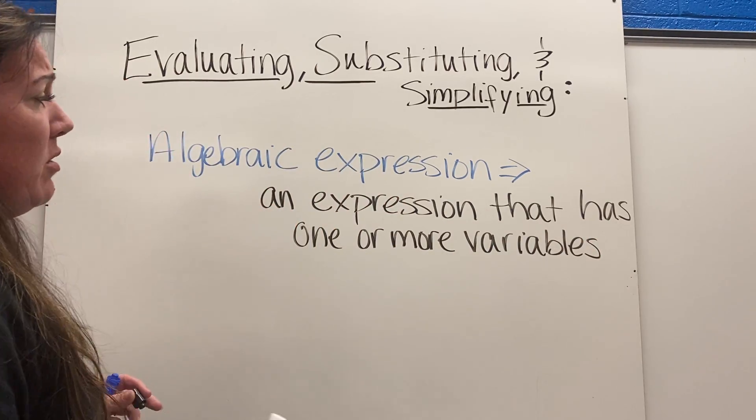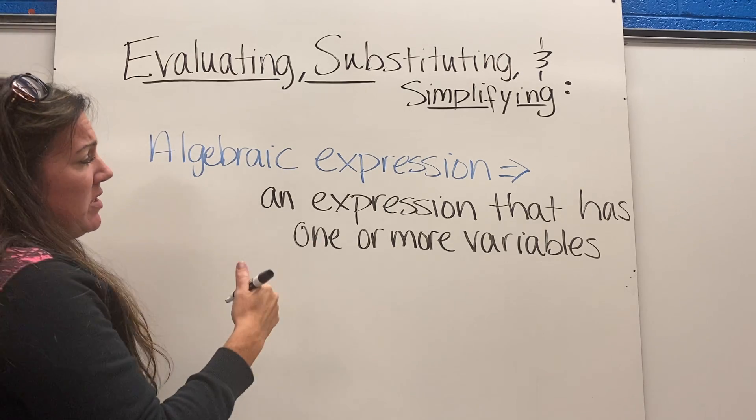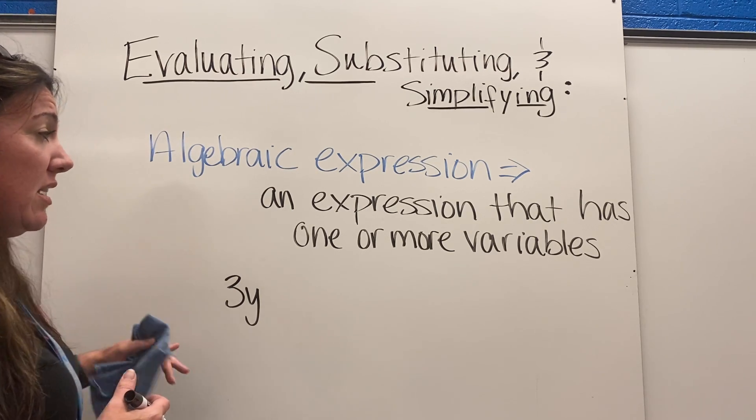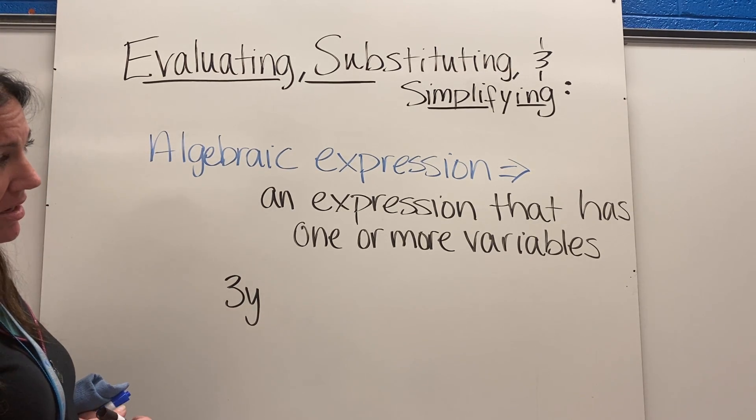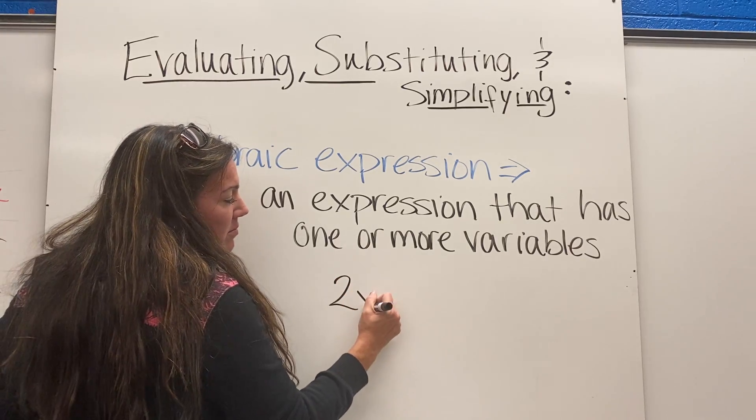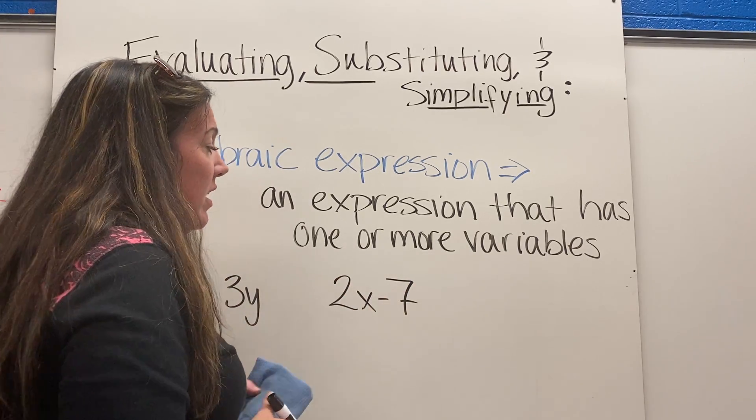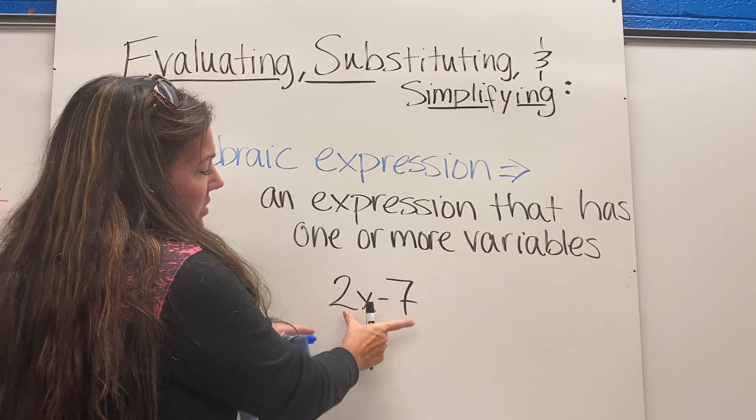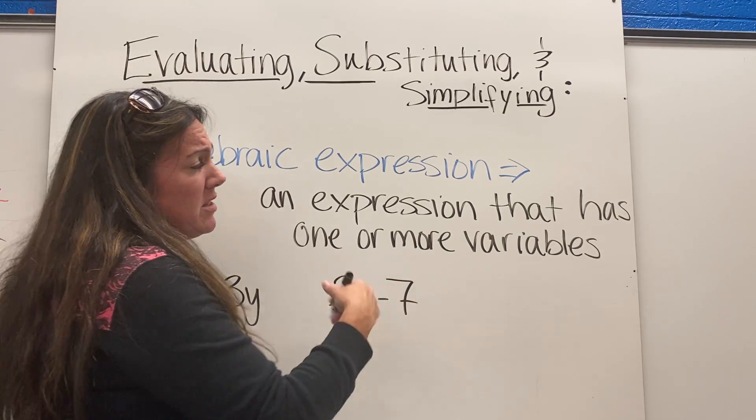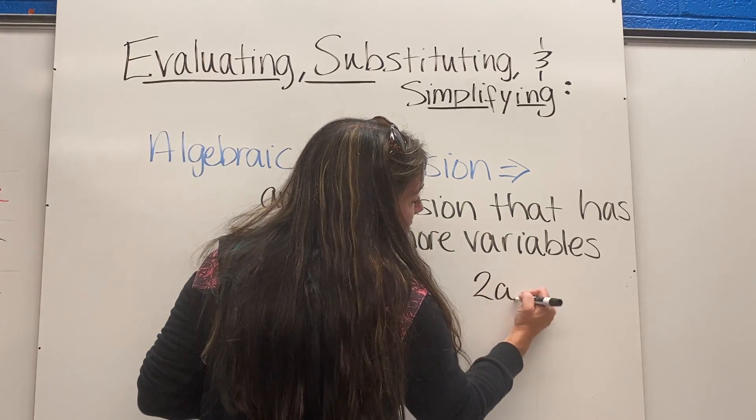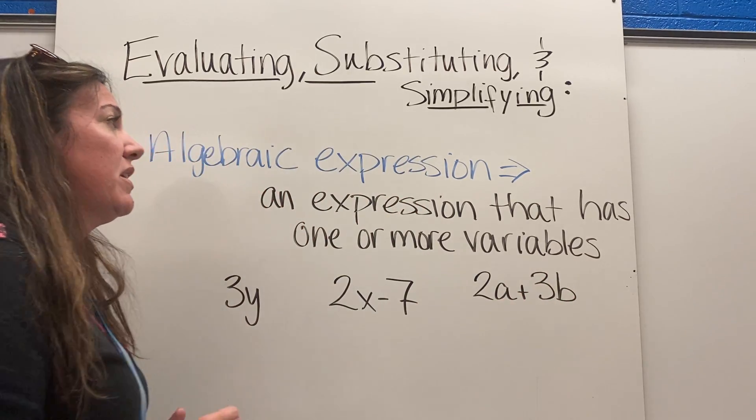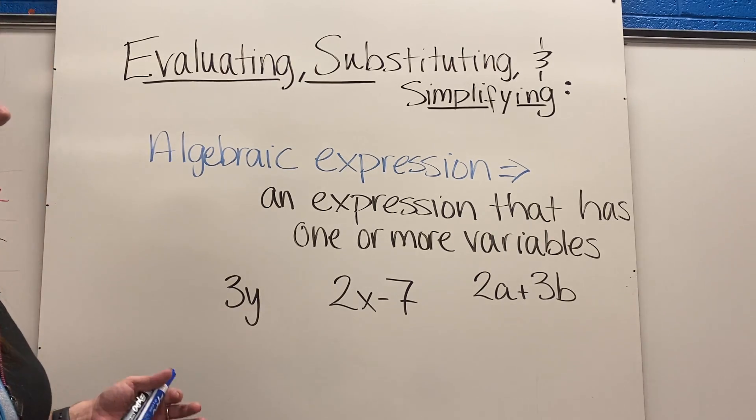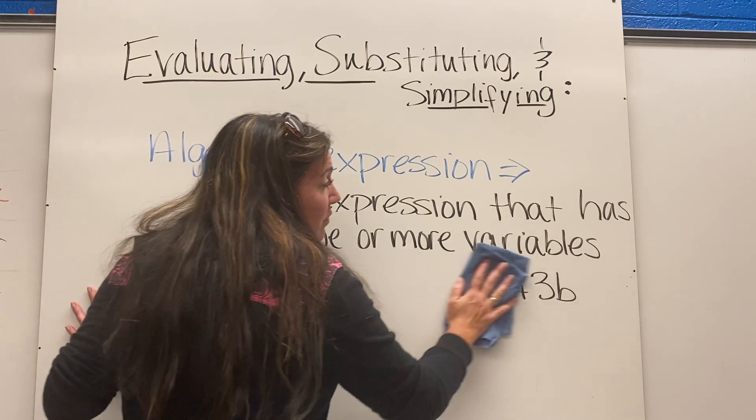There's no equal sign. So you could have something like 3y, and that's an expression. It has one or more variables, it's an algebraic expression. You could have 2x minus 7. Again there's a variable, there's no equal sign, it's an expression. Or inequality sign, there's nothing there. Sometimes there can be more than one variable, so 2a plus 3b, that's another form of an algebraic expression. When we are dealing with algebraic expressions, sometimes our directions are a little different than if we were solving equations.